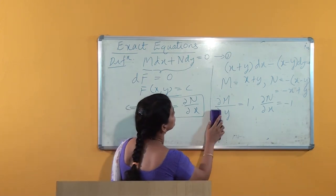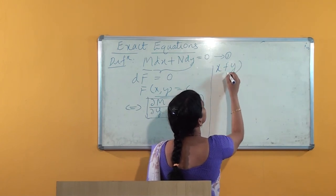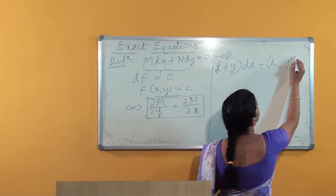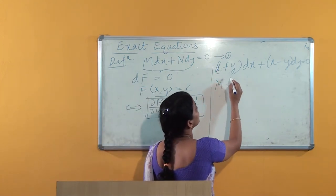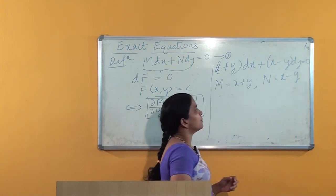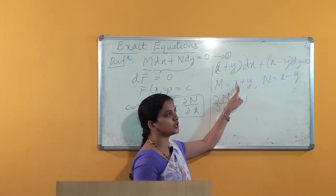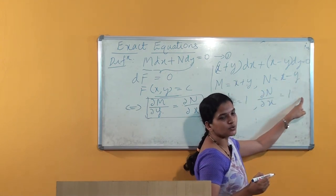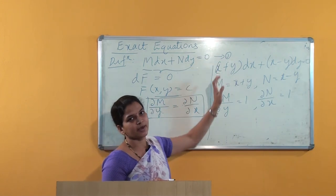Let us see another example — a slight change from the previous problem: (x + y)dx + (x − y)dy = 0. Again we identify M = x + y and N = x − y. The partial derivative of M with respect to y is 1 (x constant, derivative of y is 1). The partial derivative of N with respect to x is 1 (derivative of x is 1, y is constant so 0). Since ∂M/∂y = ∂N/∂x = 1, the differential equation is exact.